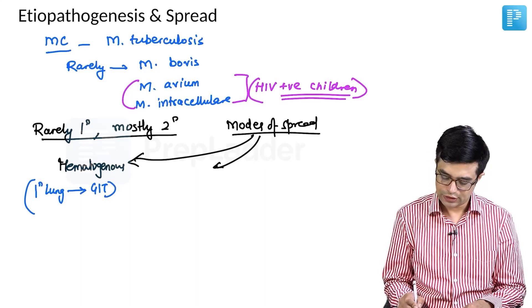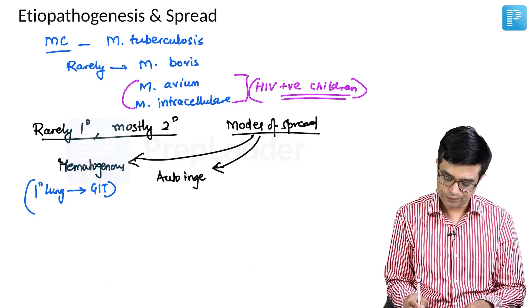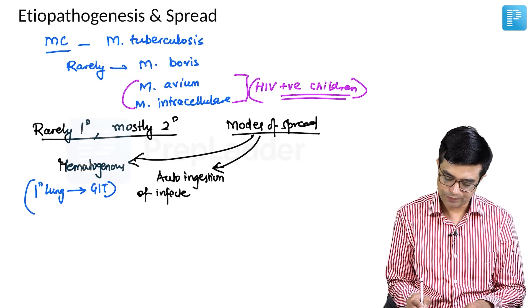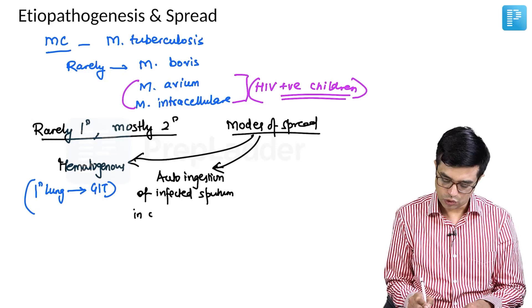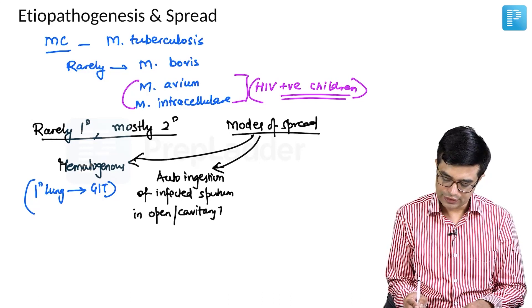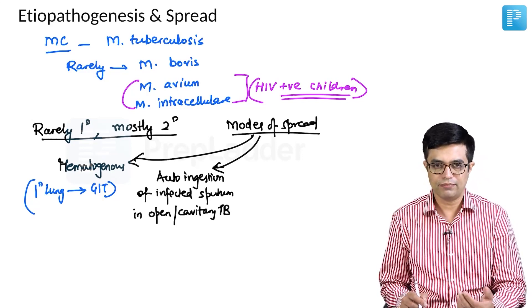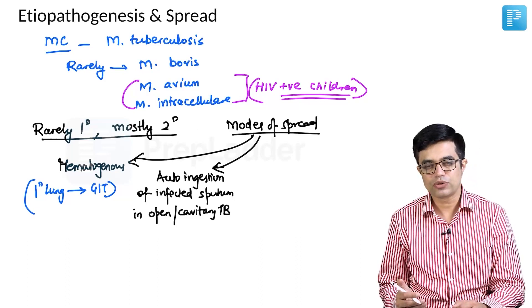Second route is through the autoingestion of infected sputum in a patient with open or cavitary tuberculosis. Suppose there is a patient, usually older children or adolescents, many times adults, they have pulmonary tuberculosis.